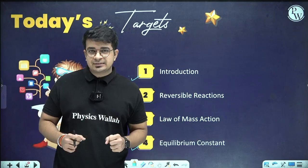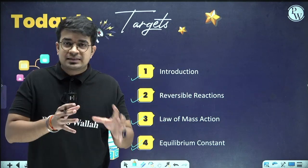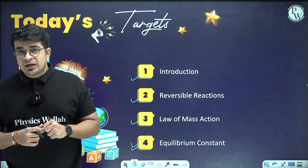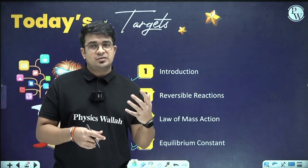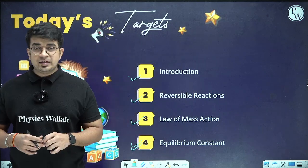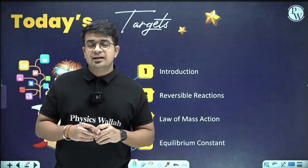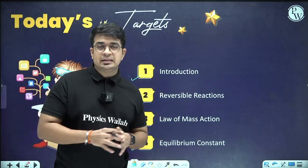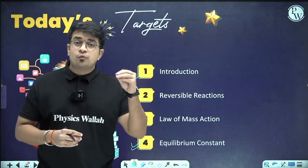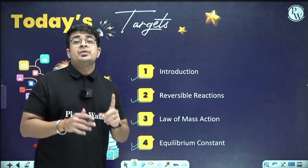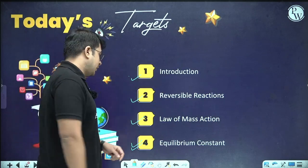We were talking about thermodynamics, so we know about system, surroundings, and the universe. We also know about reversible and irreversible processes. Now let's try to understand what actually happens in thermodynamics and correlate that with the chapter on equilibrium — specifically the chemical equilibrium part.